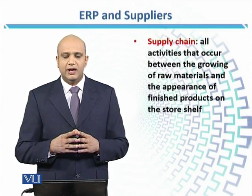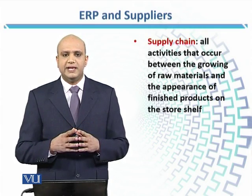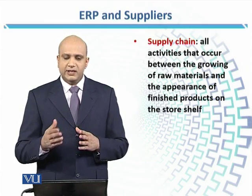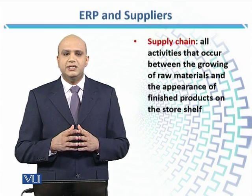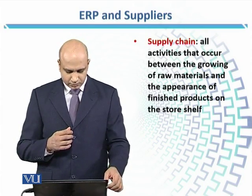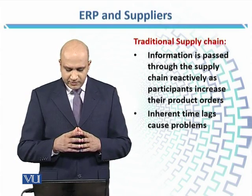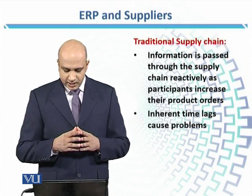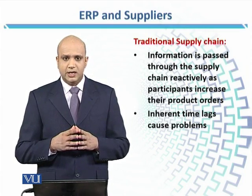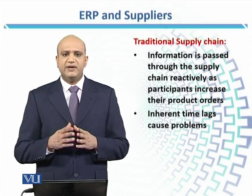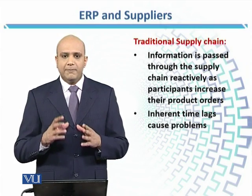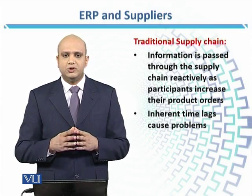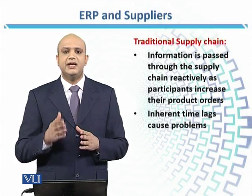Starting from the raw material — how much quantity, when it was made, in how many seasons — all the way to the finished product on the retail shop: there are many steps and many processes involved, a lot of information involved. This is the overall supply chain. If most companies, vendors, manufacturers, or retail shops have one common ERP system, then information is easily transmittable and its usage becomes easier and more relevant. Generally in traditional supply chain, information is passed through the supply chain reactively as participants increase their product orders. Reactive means if something has already happened, then you act against it. A proactive approach means you are informed before the event occurs, so that you already have the information and can plan properly in advance.